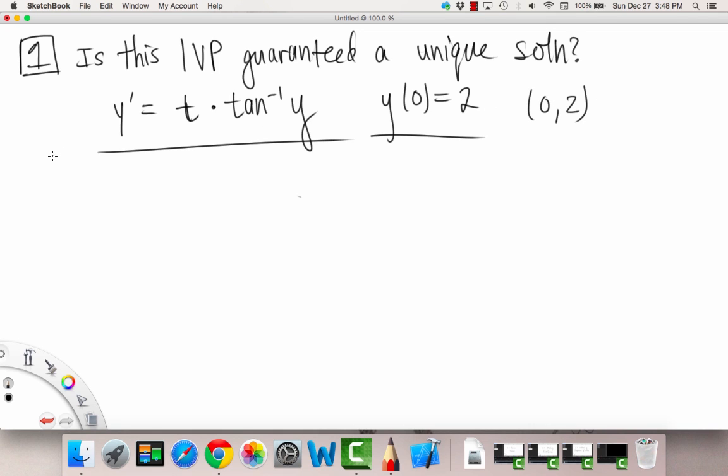The first thing we're going to check is whether the uniqueness theorem applies or not, and whether we're guaranteed that unique solution, is to check the hypotheses. The first hypothesis is that our ODE is given in normal form.